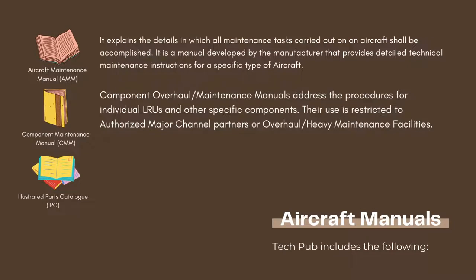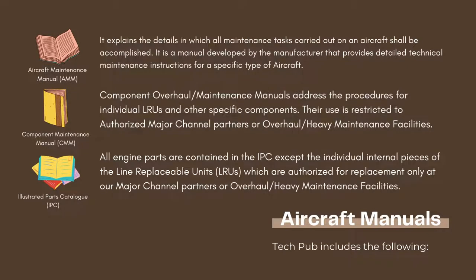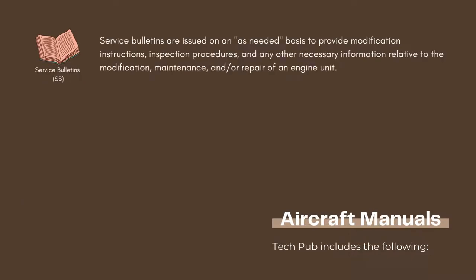The Illustrated Parts Catalog identifies specific engine components and pictorially illustrates them as produced from the factory and as modified by service bulletins. All engine parts are contained in the Illustrated Parts Catalog except the individual internal pieces of line replaceable units, which are authorized for replacement only at a major channel partner or heavy maintenance facilities.